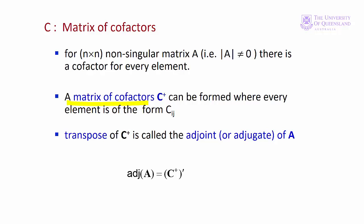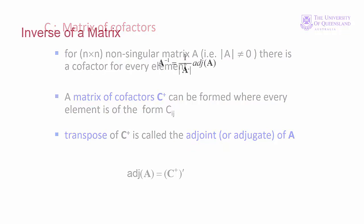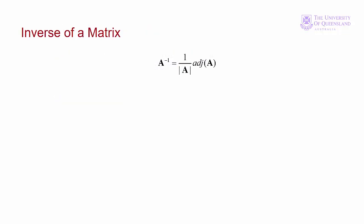The cofactor in the 1,1 position, for example, is the one we calculate by first eliminating row 1 and column 1. Once we have the matrix of cofactors, we take the transpose. That gives us the adjoint or the adjugate of A. Now there's only one more step to get the inverse: we divide the adjoint matrix by the determinant. Since the determinant is a scalar, that means we divide each element of the adjoint by the determinant.